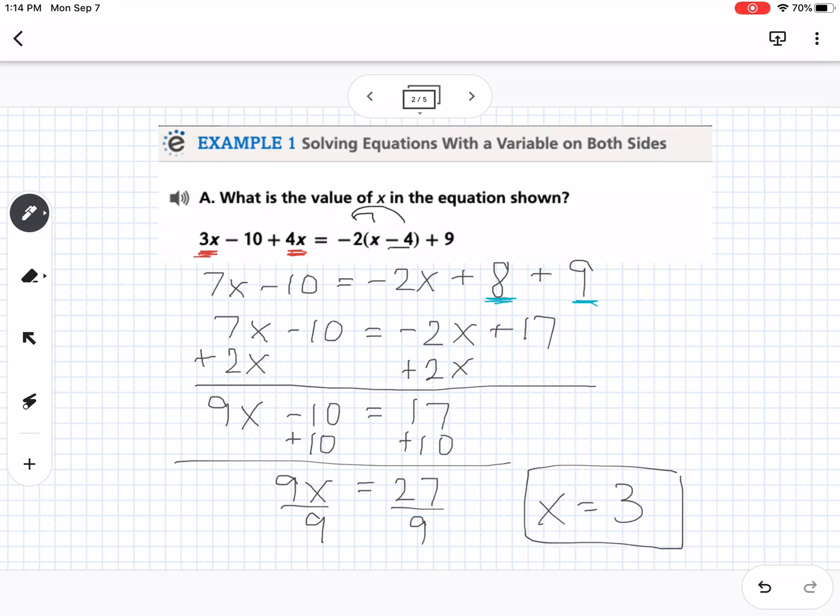So we've done problems like this before. This is an example of where you have one solution. So you'll notice I got one single answer for x at the end, so that's one solution. And the reason I'm talking about that is because in our next example, you're going to see situations where I have more than one solution, or maybe no solutions. So if I get a value for x, so I got that x was 3, that means that there's one solution.